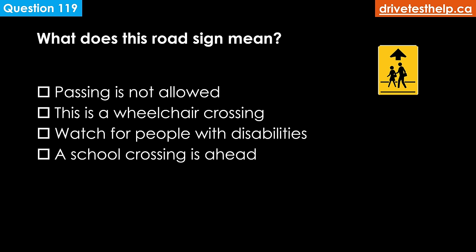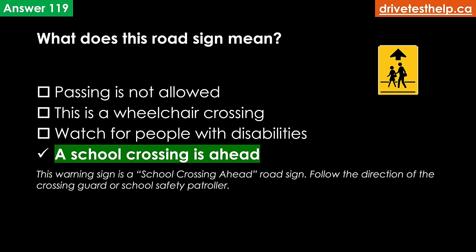What does this road sign mean? Options: passing is not allowed; this is a wheelchair crossing; watch for people with disabilities; a school crossing is ahead. The correct answer is a school crossing is ahead. This warning sign is a school crossing ahead road sign — follow the directions of the crossing guard or school safety patroller.